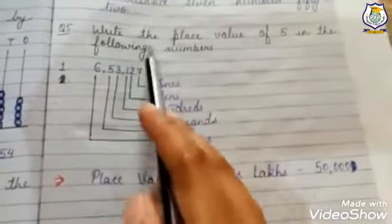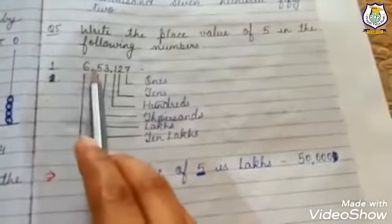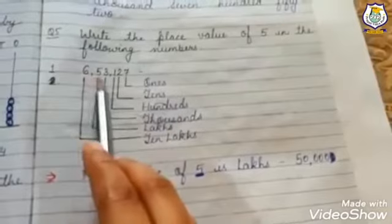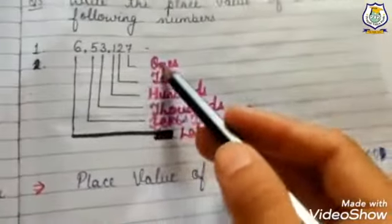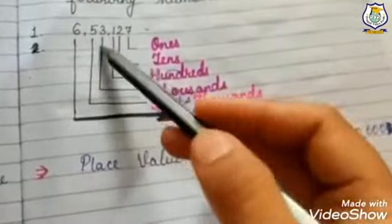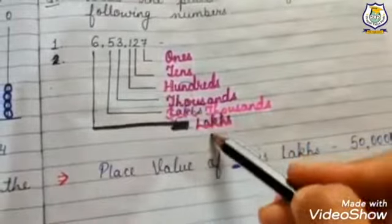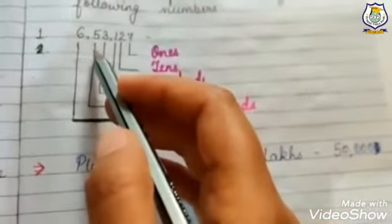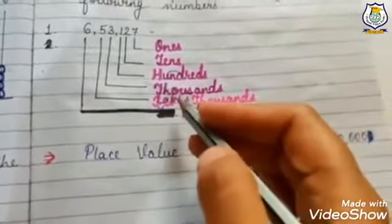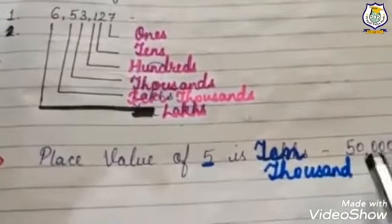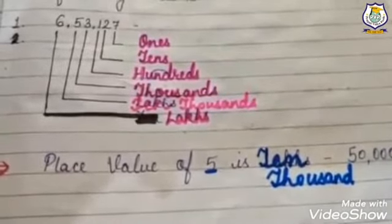Our next question is: write the place value of five in the following numbers. The first number is 66,53,127. Seven is in ones place, two is in tens place, one is in hundreds place, three is in thousands place, five is in ten thousands place, six is in lakhs place. So what is the place value of five? Five is in ten thousands place.